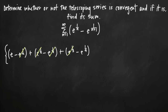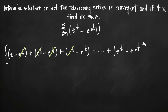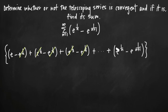We would cancel every term in between. If we continue on with this series, our last nth term would be e to the 1 over n minus e to the 1 over n plus 1. With a telescoping series, every term in the middle cancels because each value cancels with the first value in the next term, or the second value in the previous term.